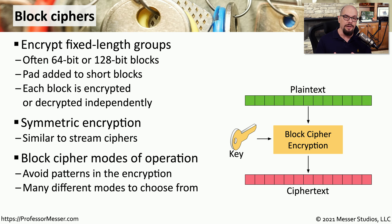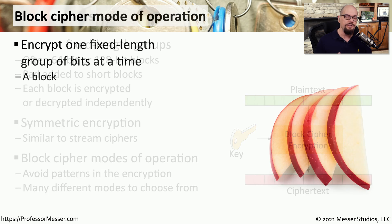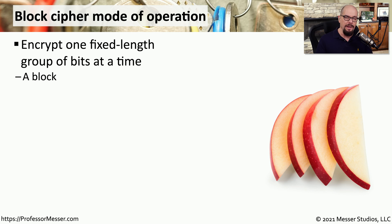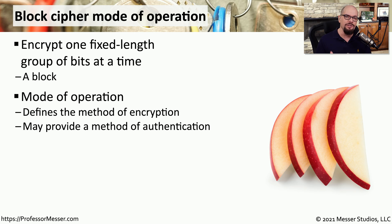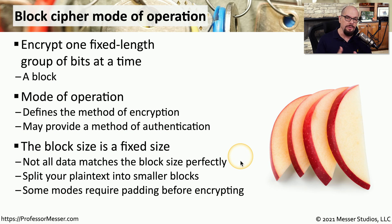There are many different ways to encrypt a block of information, and we call these different methods modes of operation. Each mode uses a similar type of input — a standard sized block of data — but with a specialized form of encryption that differs depending on the mode. The method used for encryption in one mode of operation is often quite different than another. Block ciphers start by splitting data into smaller fixed length blocks, and if a block at the end doesn't fill the entire length, we'll use padding just before the encryption process.